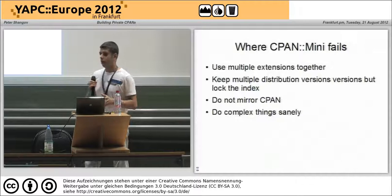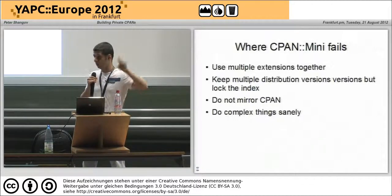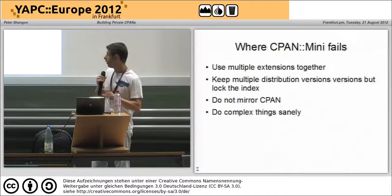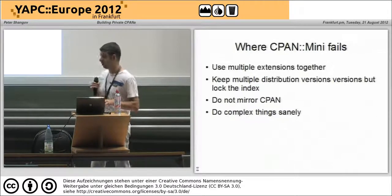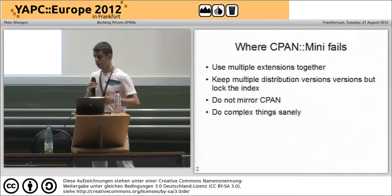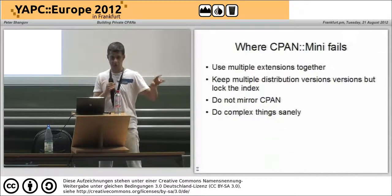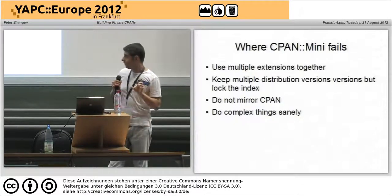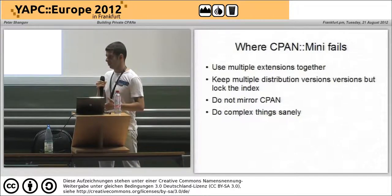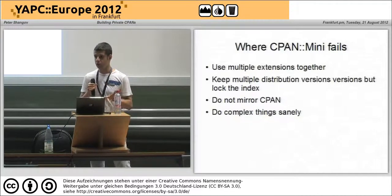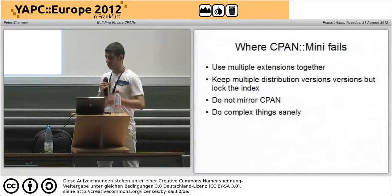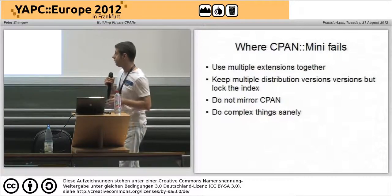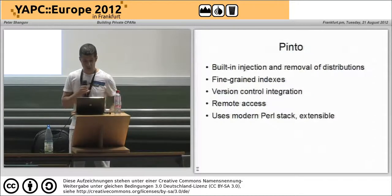This has the unfortunate consequence that you cannot use multiple extensions at the same time. For example, if you want to use CPAN mini inject and also use some other CPAN mini based extension that mirrors a specific subset of CPAN — well, you can't. CPAN mini is also very inflexible about the index files it creates. For example, if you want to upload a new distribution to your repository but not add it to the index — so you keep an older stable version in your index but can still perform tests with the new one — you can't do that. CPAN mini is also very tightly coupled with the mirroring process. If you want to create a pass-through mirror which doesn't actually update from a public CPAN mirror, it's very difficult to do. It's not impossible, but you have to jump through some very awful hooks and the end result is not very pretty.